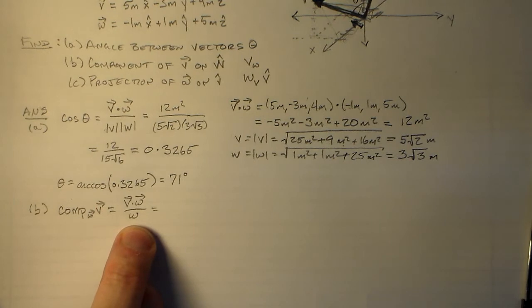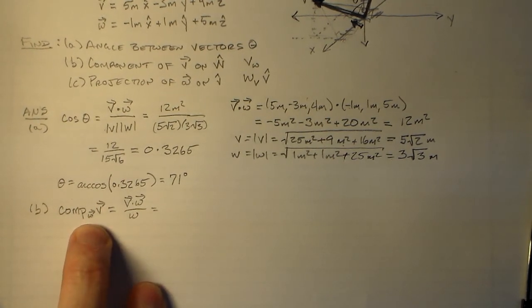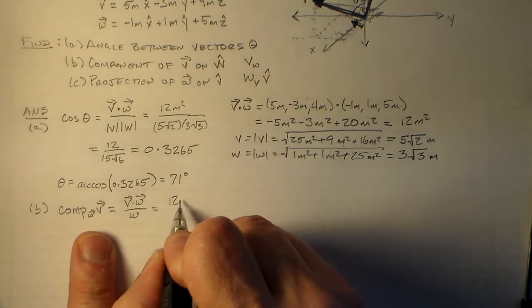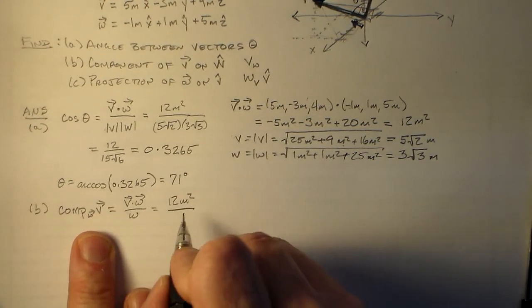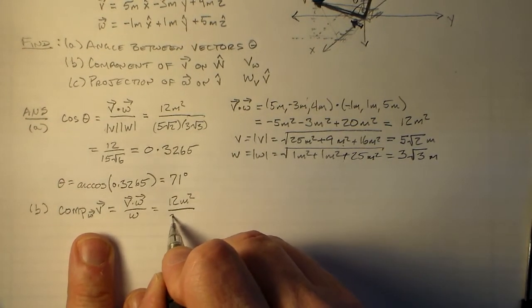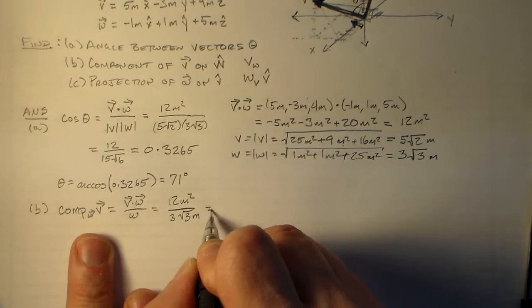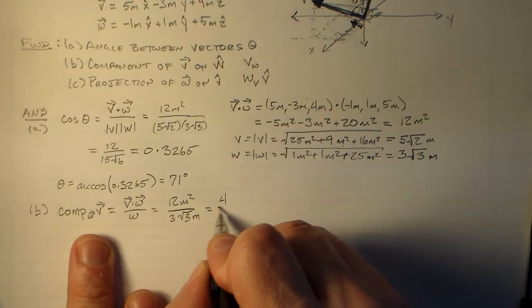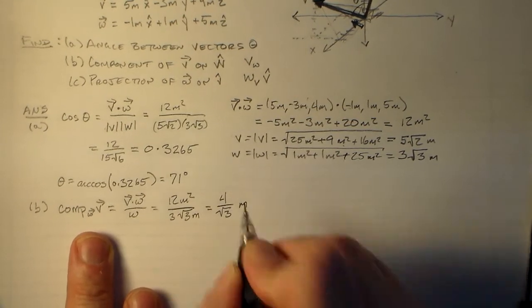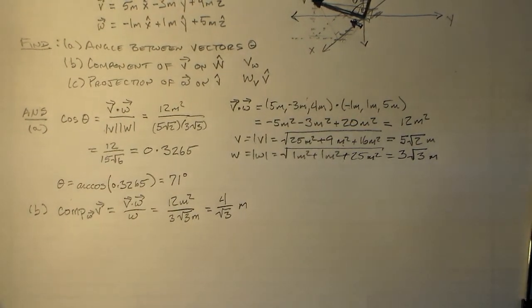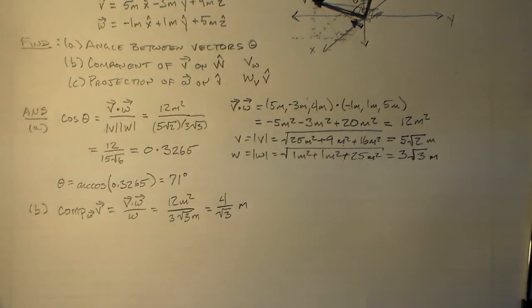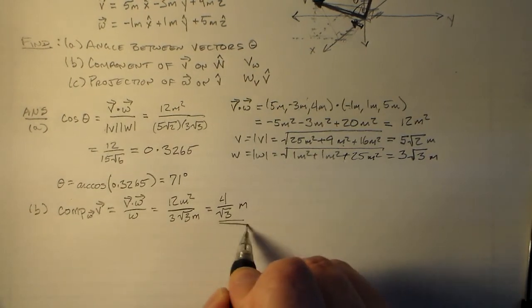The dot product divided by the magnitude of the direction that you're interested in. So that's 12 square meters over 3 root 3 meters, which is equal to 4 over root 3 meters, right? Or 4 root 3 over 3 meters. However you like it, that's how it works out. Nice and simple.